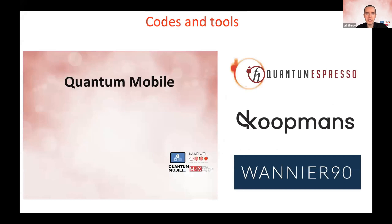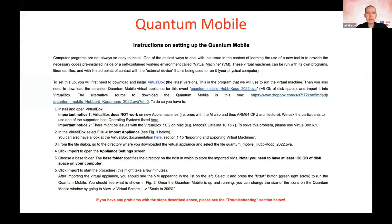This is a brief introduction about the codes and tools of this tutorial. We will use Quantum Mobile, which has the Quantum ESPRESSO package installed together with the Koopmans package — to be introduced in more detail during day three — and the Wannier90 package, which will be introduced later today. You should have already installed Quantum Mobile in advance. About 200 of you have already successfully installed it. If you haven't done so yet, you can still try, and you can join the hands-on later by contacting us privately.